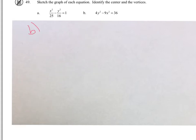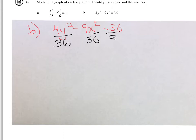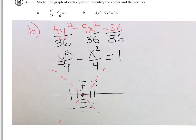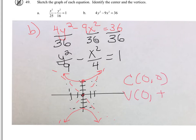For part B, I first have to make this equal to 1 by dividing everything by 36. We get Y squared over 9 minus X squared over 4 equals 1. The center is at (0, 0). I'll go 3 in the Y direction and 2 in the X to get the rectangle, then draw the asymptotes dashed. Because the Y variable is positive, it opens in the Y direction. The vertices are at 0, plus or minus 3.